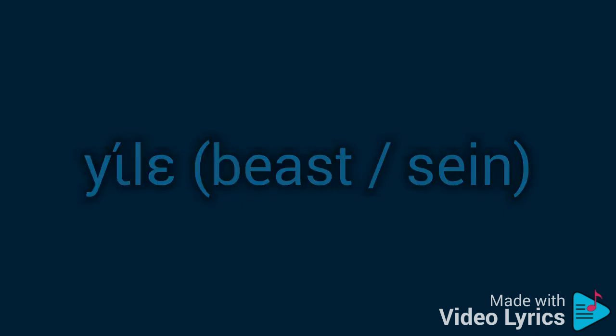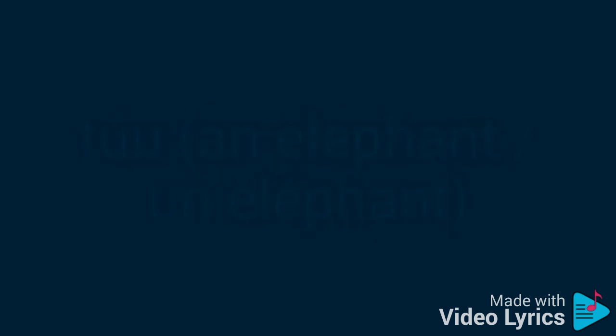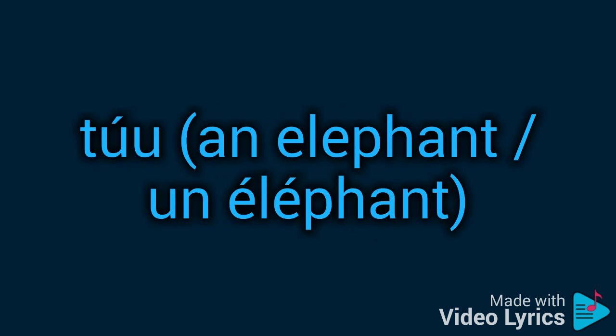Now we have the word 'feh lah', 'feh lah'. The tone is on the last vowel 'ah' — 'feh lah' — which means 'bats' in English and the equivalent in French. This word has a high tone on the vowel and it means 'a child' in English and 'un enfant' in French.